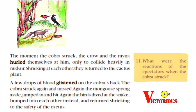The moment the cobra struck, the crow and the mina hurled themselves at him, only to collide heavily in mid-air. Shrieking at each other, they returned to the cactus plant. A few drops of blood glistened on the cobra's back. The cobra struck again and missed. Again the mongoose sprang aside, jumped in and bit. Again the birds dived at the snake — and bumped into each other instead. They returned, shrieking, to the safety of the cactus.